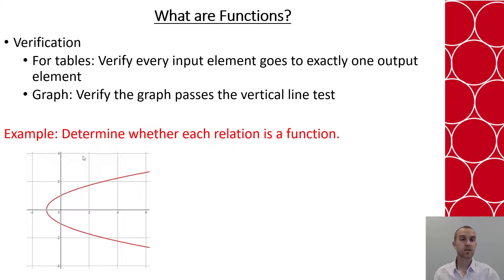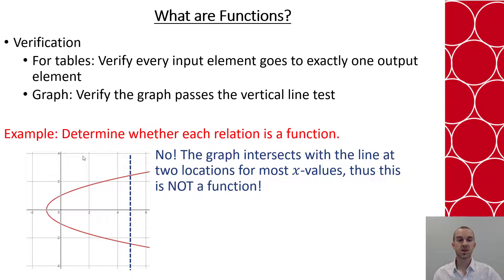Contrast that with this horizontal parabola. As I run my vertical line across I start to hit at two places for every X value which goes against being a function, so because those locations are hitting it with two values for X it is not a function.